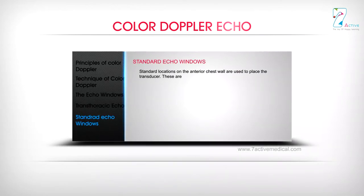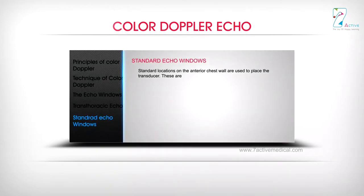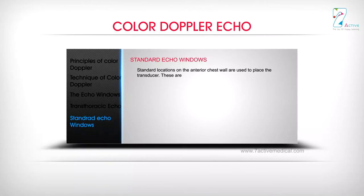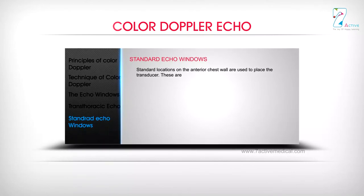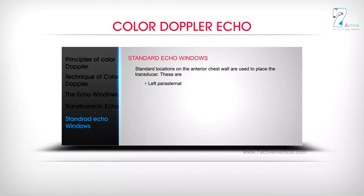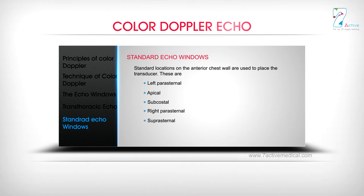Standard locations on the anterior chest wall are used to place the transducer. These are: left parasternal, apical, subcostal, right parasternal, and suprasternal windows.